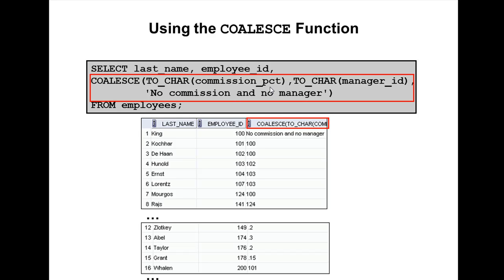For King, commission percentage is null, and King doesn't have any managers — he is a vice president of the company. So the query returns 'No commission' and 'No manager' for King. Let me run this query.